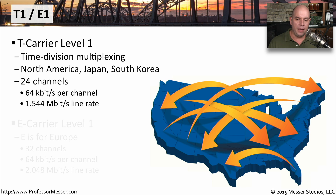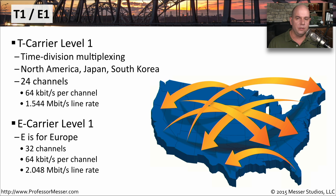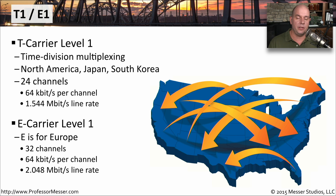If you're elsewhere in the world, for instance in Europe, you have the E1. E1s have 32 channels, again at 64 kilobits per second each, giving you a total of 2.048 megabits per second as a total line rate over an E1.